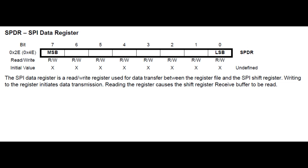There are three registers we have to look at when programming the SPI bus. The first is the SPI data register, which can hold 8 bits or 1 byte and resides at hex 4E in memory. Writing to the register initiates the data transmission automatically — as soon as we write to it, it starts shifting out to the slave. Reading the register causes the shift register receive buffer to be read, so we read it when we want to receive a byte.